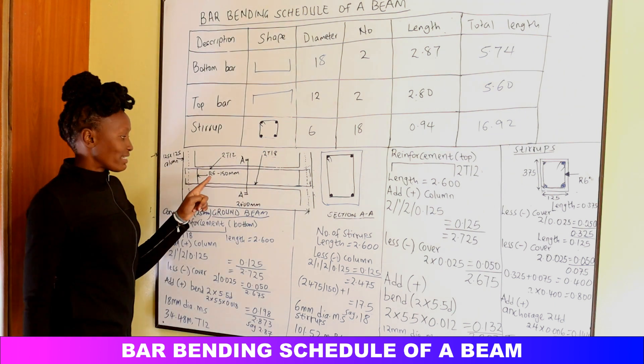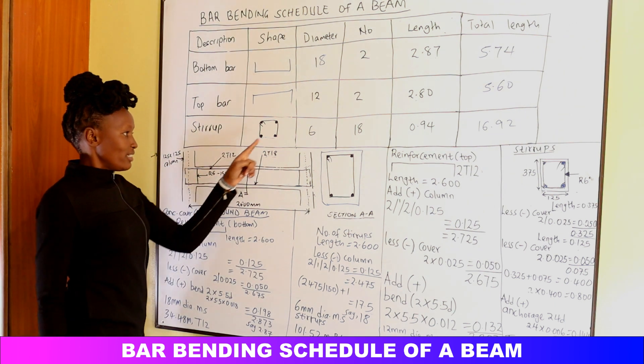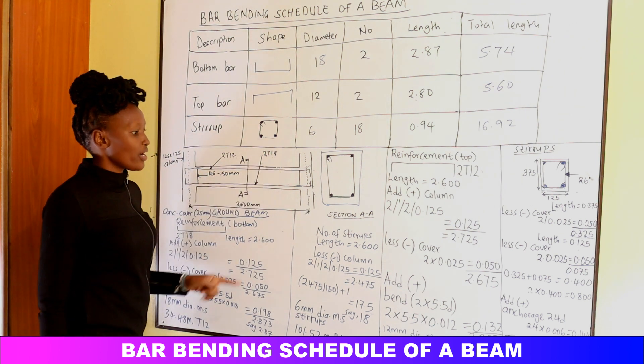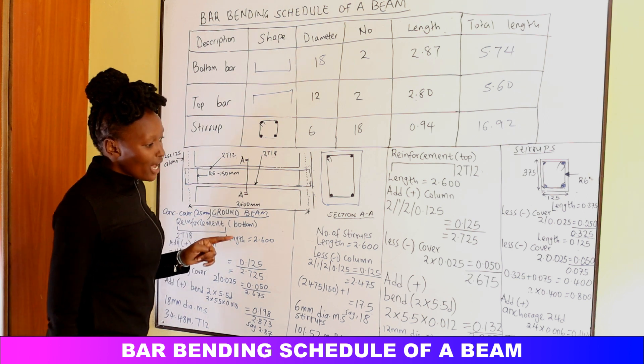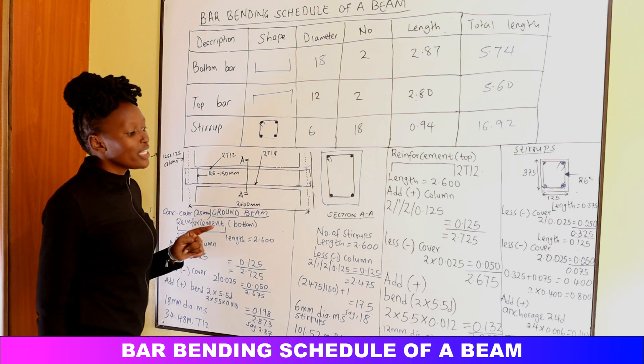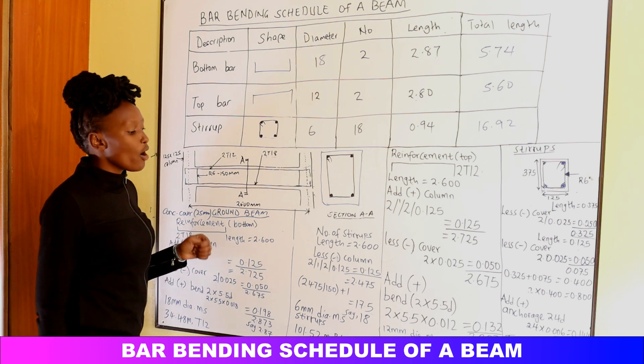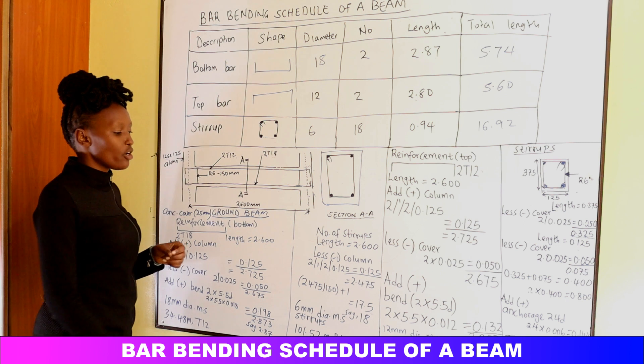Each stirrup must have anchorage hooks. The hook length formula is 24d, where the stirrup diameter is 6 mm: 24 × 6 = 144 mm = 0.144 m. Total stirrup length = perimeter + anchorage = 0.80 + 0.144 = 0.944 m, approximately 0.94 m. The stirrup diameter in the schedule is 6 mm.